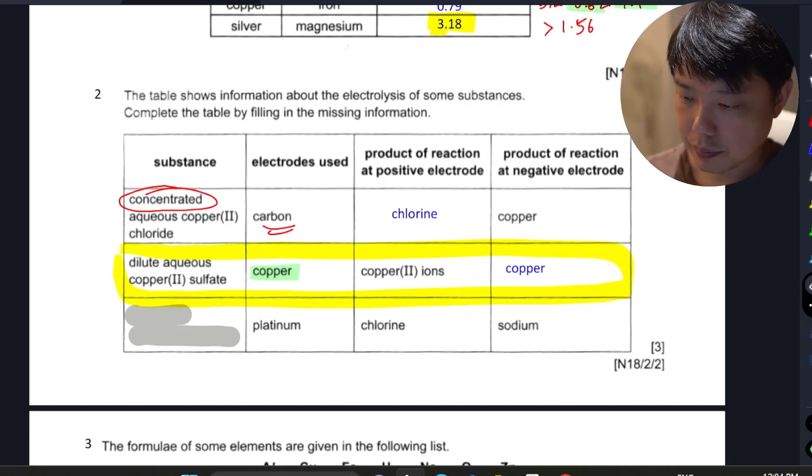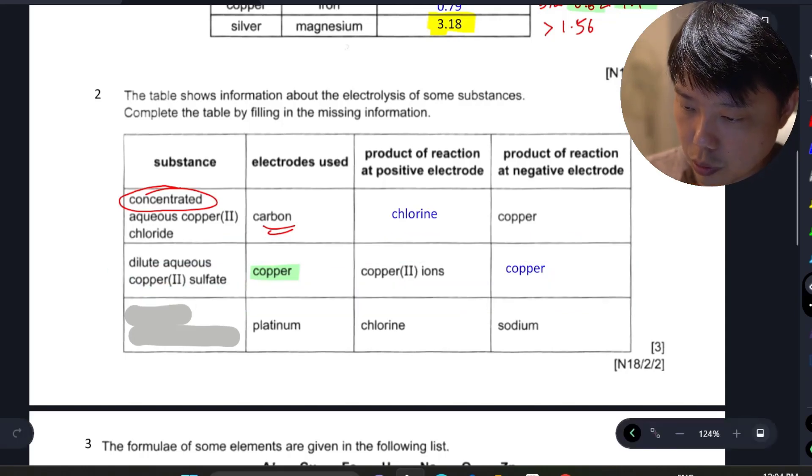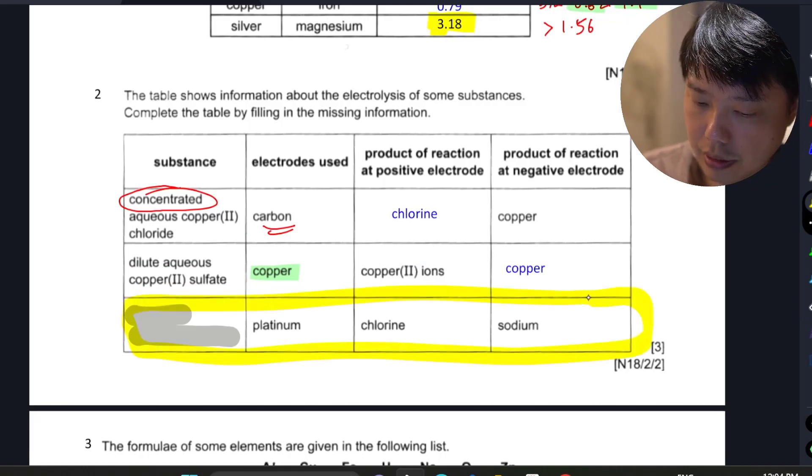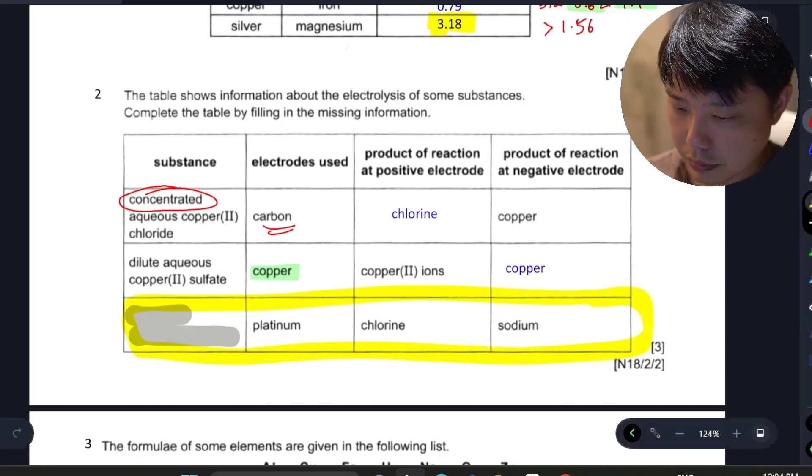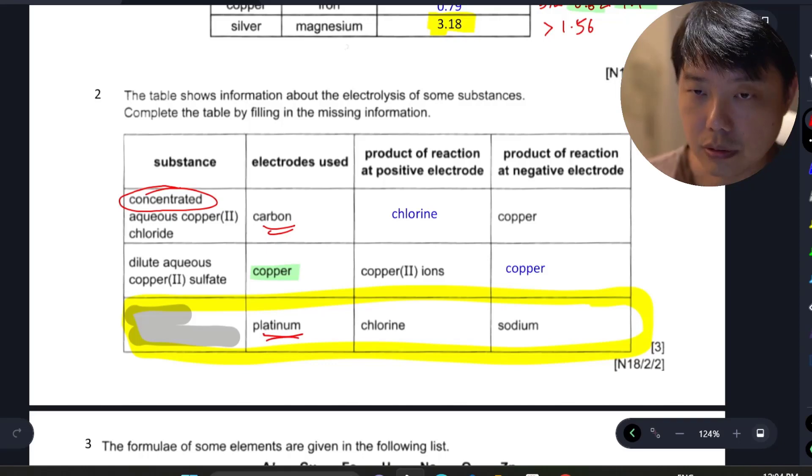The last one, if you notice this last row here, they say that it's an inert electrode. For this inert electrode, you only get chlorine and sodium. Now sodium, it doesn't get discharged unless you have molten ionic compound, because sodium is very reactive. It is least preferred to be discharged if any of the other cations are around.